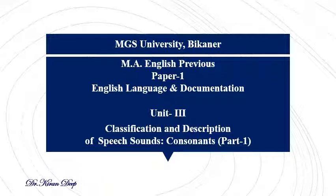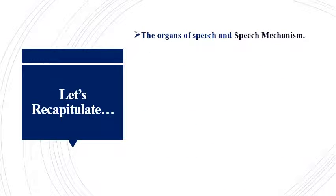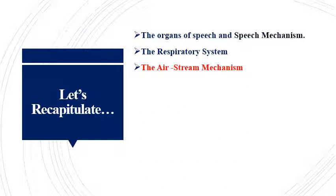Hello students, let's continue with our journey to know more about English speech sounds. In this session I'm going to talk about classification and description of consonantal sounds. But first, let's recapitulate what we have done. In the first session on speech mechanism, we familiarized ourselves with how the speech mechanism is formed, how the three systems — the respiratory, the phonatory, and articulatory — work together in the production and transmission of speech sounds. We discussed in detail the structure and function of the respiratory system, where the air stream mechanism initiates the process of speech production.